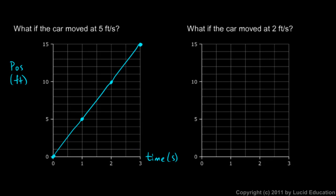And then on the next graph, we're asked, what if the car moved at 2 feet per second? And again, let's label these. This is the position, measured in feet. And specifically, it's the position at any time, and time's measured in seconds.